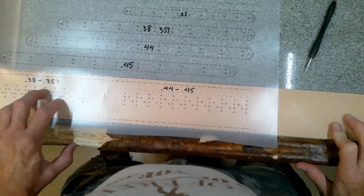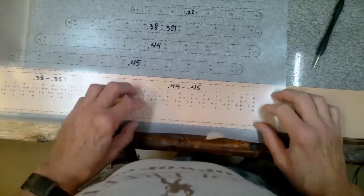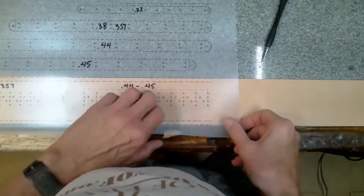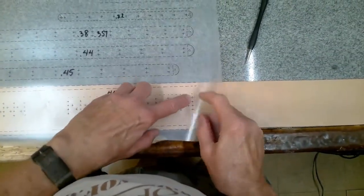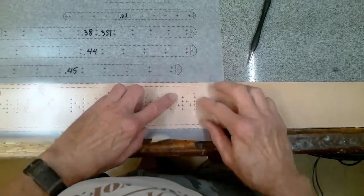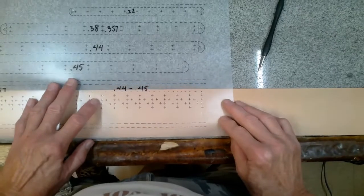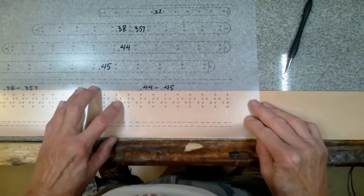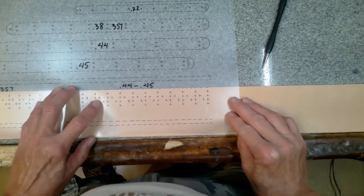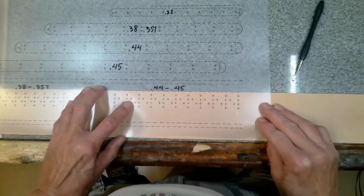While this video isn't of the Eldorado money belt project, it does show how the stitching holes are laid out on a cartridge belt. The cartridge belt pattern is laid out for standard loop spacing on the belt with guidelines indicating the top and bottom of both two and a half inch belts and three inch belts.